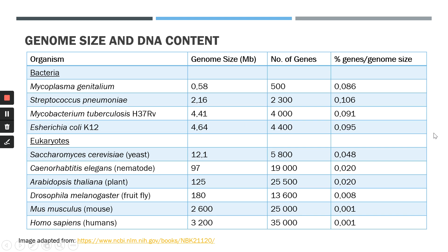Another difference to consider is the number of protein-coding genes in the genome versus the genome size. What I've done in this last column is a rough estimate by dividing the number of genes by the total genome size to get an idea of the number of protein-coding genes within the space of the genome. Remember that the number of genes does not adequately reflect the number of bases that these genes occupy, so this is just a rough idea. For prokaryotes, the values are approximately 0.086, 0.1, 0.091, and 0.095.